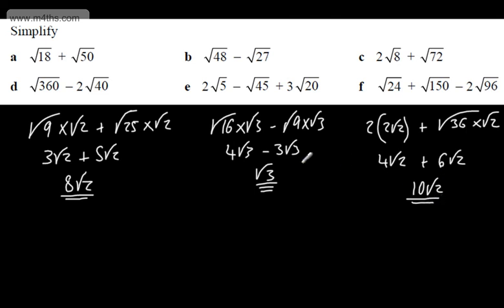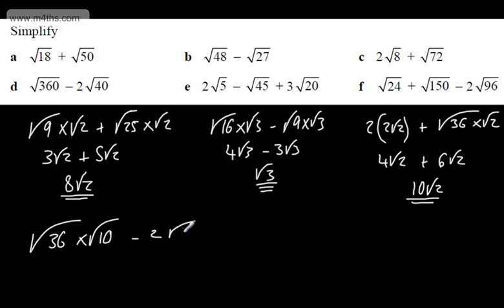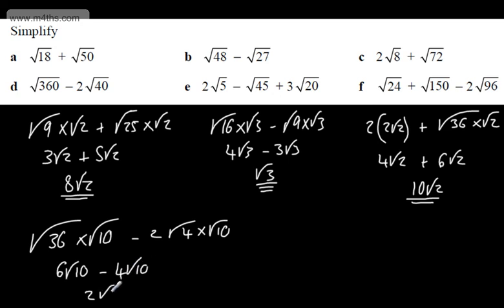For root 360 minus 2 root 40: root 360 is root 36 multiplied by root 10, and 2 lots of root 40 written as root 4 multiplied by root 10. I've spotted both contain a root 10 — you can prime factorise if you prefer. This gives 6 root 10 minus 4 root 10, equalling 2 root 10.